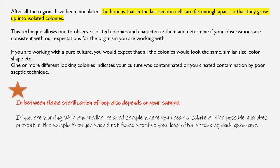After all regions are inoculated, the goal is to get isolation in the last section or last quadrant, where cells are far enough apart to grow into isolated colonies. We dilute the microbial population from first quadrant to second to third to fourth. Isolation in the fourth is most likely, but if your initial population is low, you may get isolated colonies in the third quadrant as well.